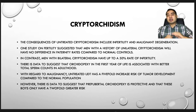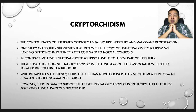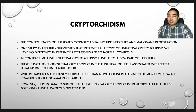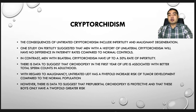The consequences of untreated cryptorchidism include infertility and malignant degeneration. Men with a history of unilateral cryptorchidism will have no difference in paternity rates compared to normal controls. In contrast, men with bilateral cryptorchidism have up to a 50% rate of infertility. There is data to suggest that orchidopexy in the first year of life is associated with better total sperm counts in adulthood. Regarding malignancy, untreated undescended testis has a five-fold increased risk of tumor development compared to the normal population; however, prepubertal orchidopexy is protective and reduces this to only a two-fold greater risk.